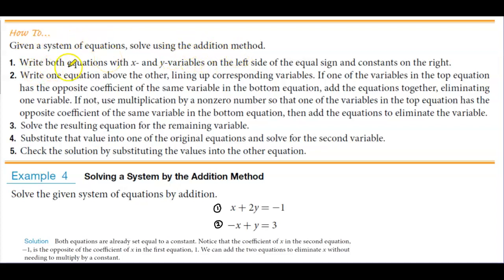Number one, we're going to write both equations with x and y variables on the left side of the equal sign and constants on the right. Number two, we're going to write one equation above the other, lining up corresponding variables. If one of the variables in the top equation has the opposite coefficient of the same variable in the bottom equation, we're going to add the equations together, eliminating one variable.